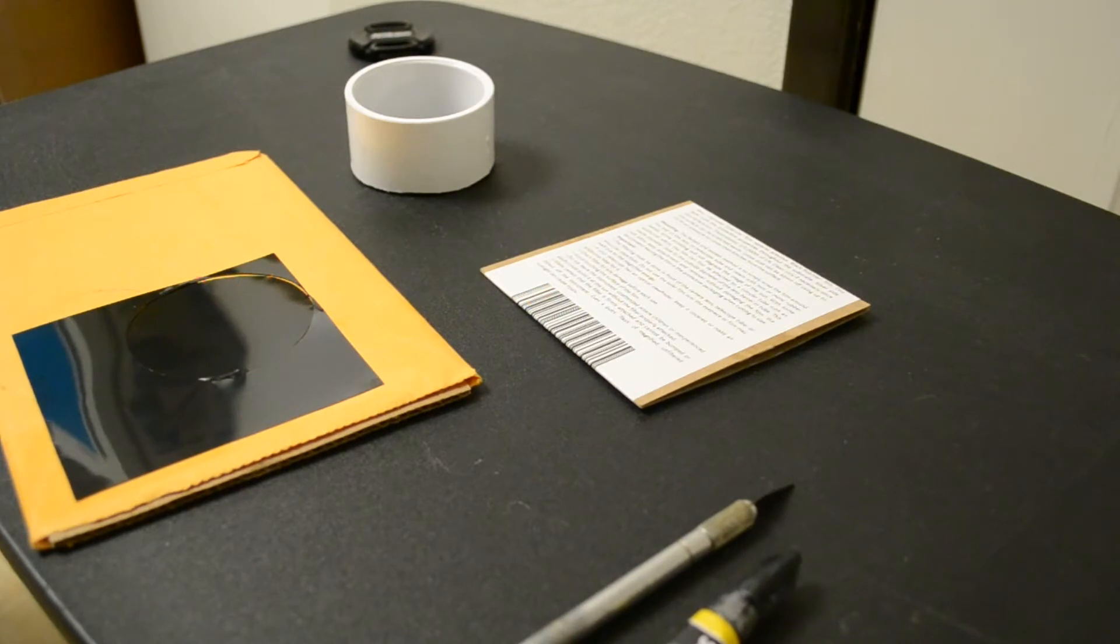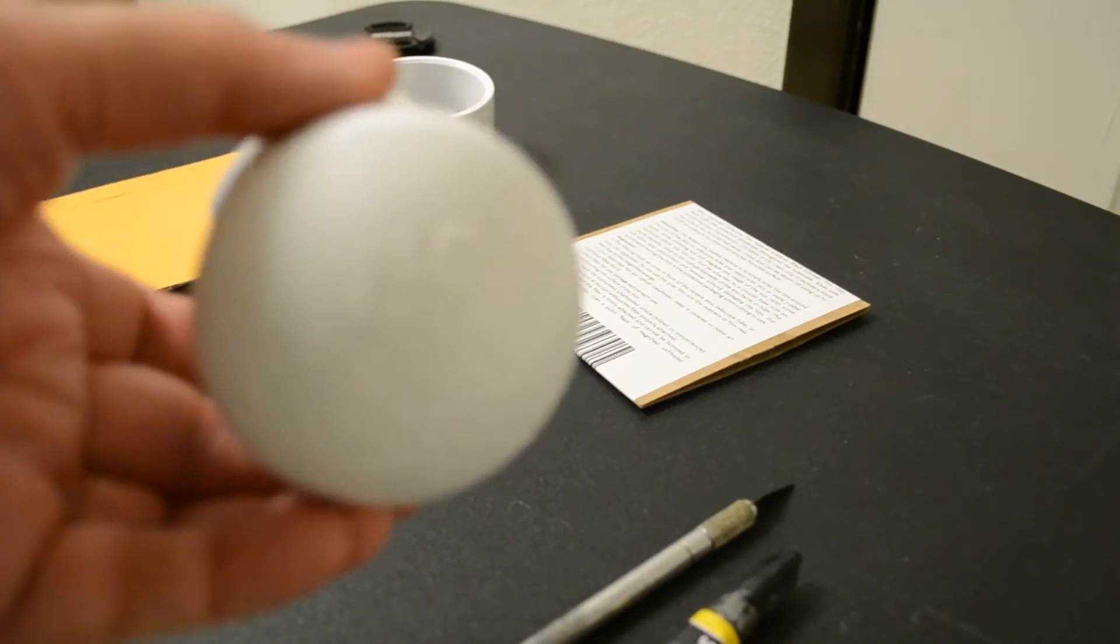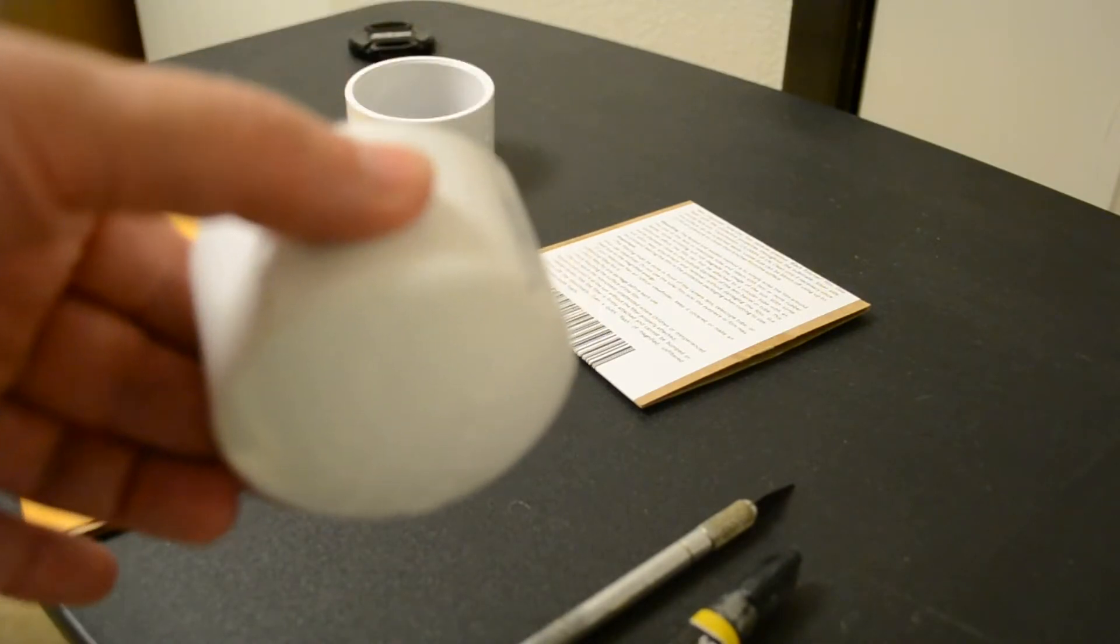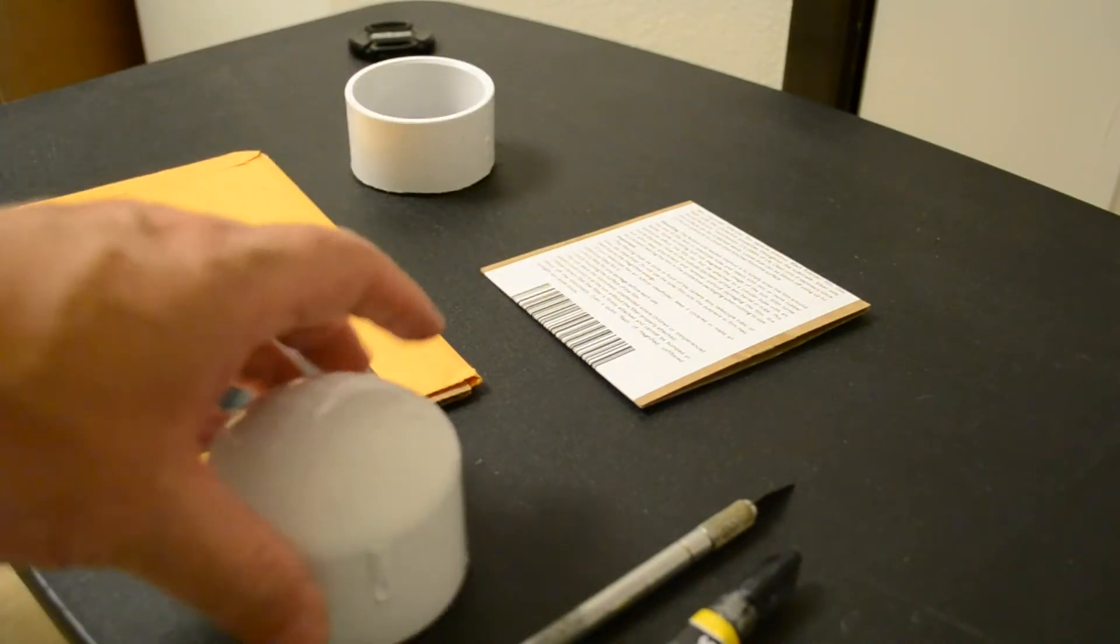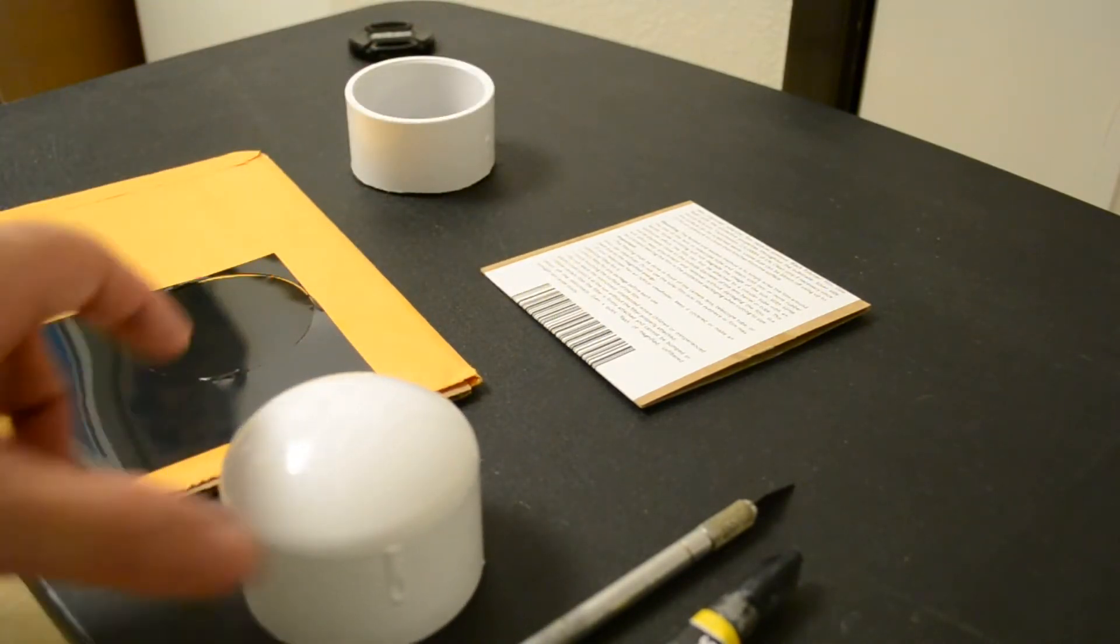Hey everybody, I'm making a solar filter for my camera so I can film the eclipse. What I did was I went to Lowe's and I bought a PVC cap, and this one is a two inch cap.